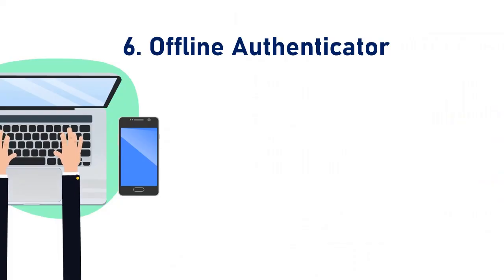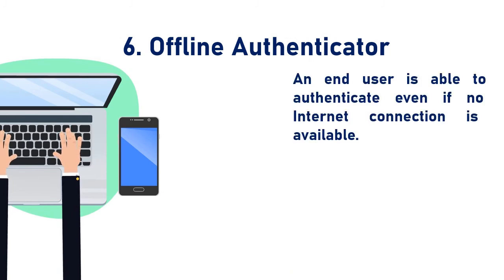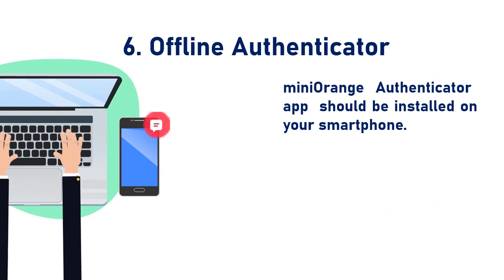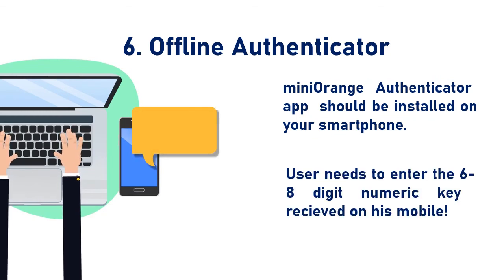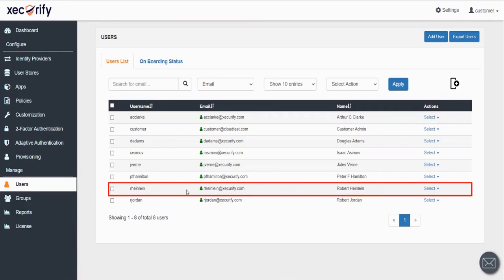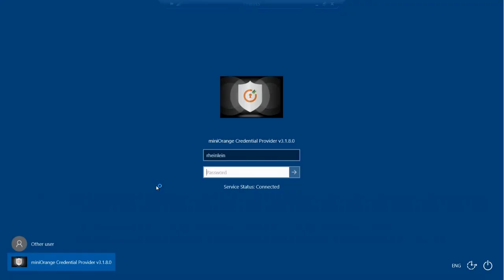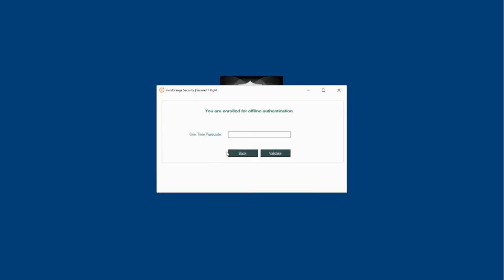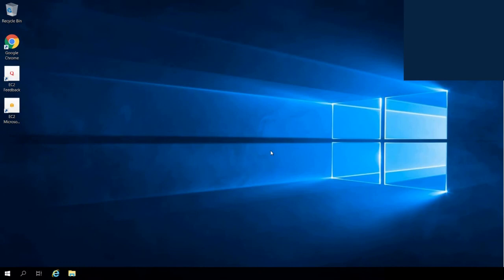Next method is Offline Authenticator. By using Offline Authenticator, an end user is able to authenticate even if no internet connection is available. An internet connection is required when logging in for the first time using this method, so that the server can validate the user's credentials. To set this method, you need the Mini Orange Authenticator app installed on your smartphone. The user just has to enter the 6- to 8-digit numeric key generated on this app. Let's try and set up this method for our next user. Sign in with the login credentials of the selected user. Select the Offline Authenticator option. Enter the 6-digit code and then click on Validate. You have successfully logged into the Windows application using the Offline Authenticator method.